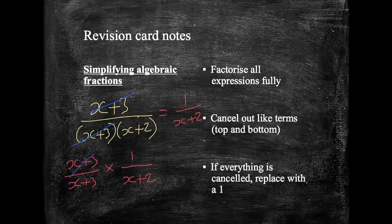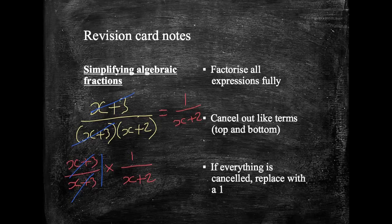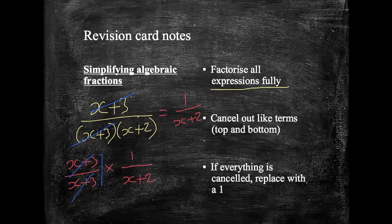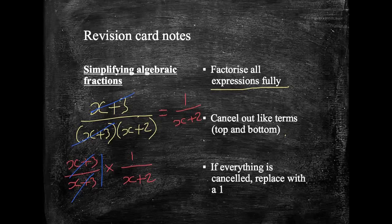So, this cancels out to give us 1 multiplied by 1 over x plus 2. Okay, so in terms of what we're actually doing then in every question like this, we're trying to factorise all our expressions as fully as possible to enable us to cancel out any like terms. If it looks like, as I've just done an example here, we've cancelled everything out, but we're not quite sure what to put at the top, it's always replaced here by 1. If everything's disappeared, we replace it with a 1.